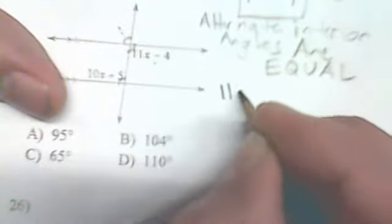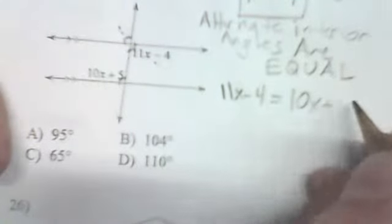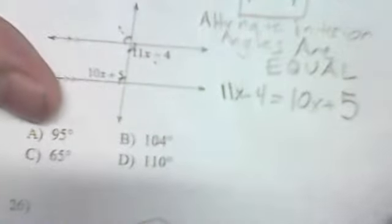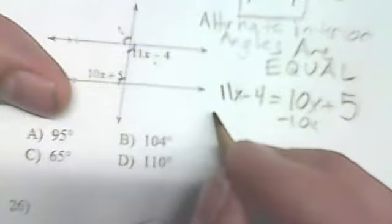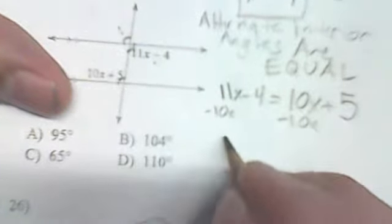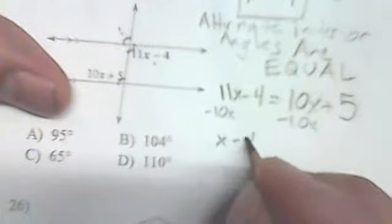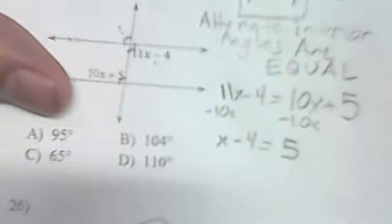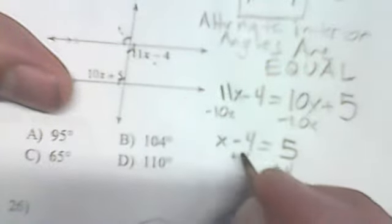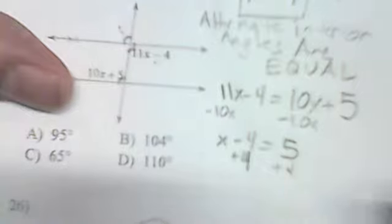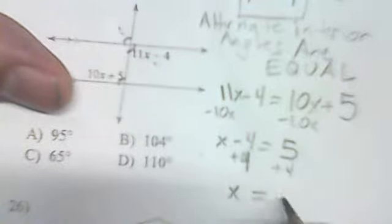So the next thing we're going to do is set up an equation since they are equal. I forgot that part. Alternate interior angles are equal. So basically we're going to set up the equation 11x minus 4 equals 10x plus 5. And I'm going to subtract 10x from both sides so that it eliminates and I'll subtract 10x from this side. And now we have the x only on one side. And we have only one step to do. Add 4 to this side and that side. And what is 5 plus 4? It's 9. So we get x equals 9.